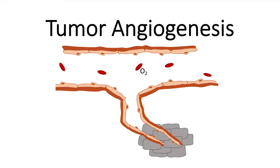Welcome to today's talk about tumor angiogenesis. Angiogenesis in general is the formation of new blood vessels from pre-existing ones. Many diseases are associated with the formation of new blood vessels. Today we will look into cancer — specifically, how does a tumor make sure to get enough blood and oxygen supply?